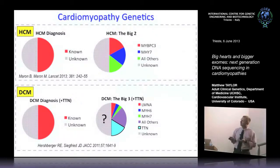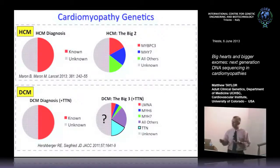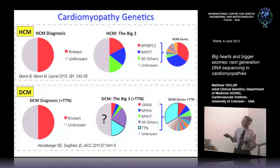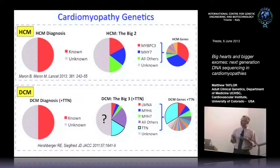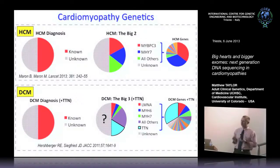Looking at our numbers, we were able to fill in a fairly big chunk of dilated disease by the addition of Titin — it's now really the major gene in dilated cardiomyopathy. This has somewhat shifted the field, because previously there were so many genes you didn't know which to focus on. There's now a lot of attention on Titin, accounting for 20 to 25% of dilated cardiomyopathy, making it a very attractive treatment target.